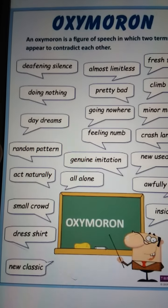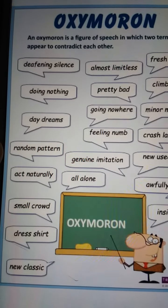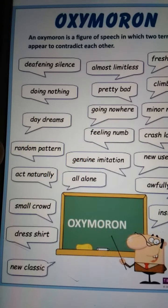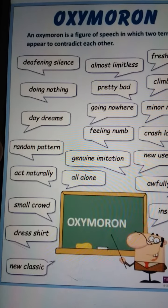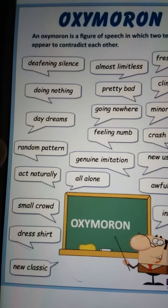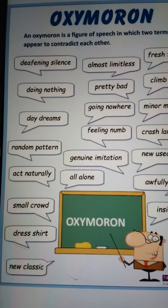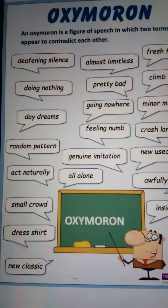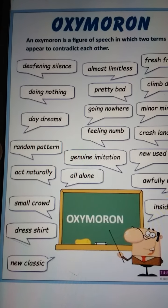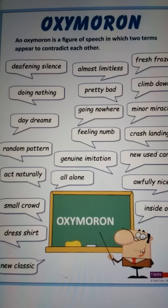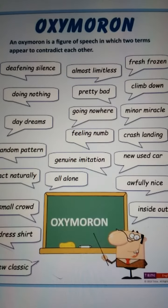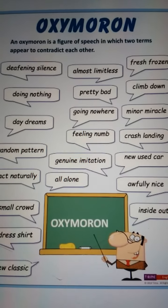For example, 'day dreams' — जबकि हमें सपने रात में आते हैं। 'Random patterns' — जब patterns है तो random कैसा, और random है तो pattern कैसे। 'Act naturally' — अगर acting है तो natural कैसे होगा। These are very important oxymorons. 'Small crowd' — जब crowd है तो small नहीं होना चाहिए। 'New classic,' 'almost limitless,' 'pretty bad.'